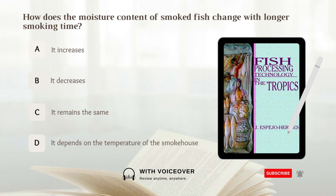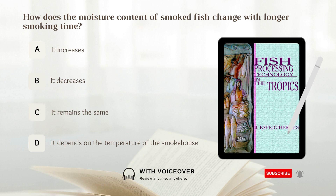How does the moisture content of smoked fish change with longer smoking time? A. It decreases. B. It decreases. C. It remains the same. D. It depends on the temperature of the smokehouse. Answer: B. It decreases.